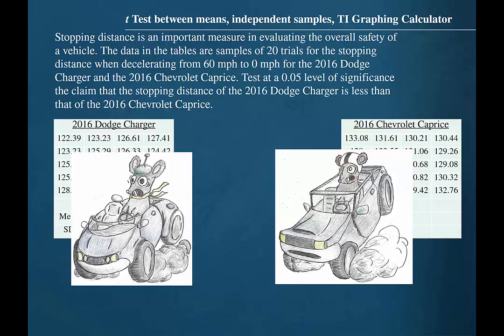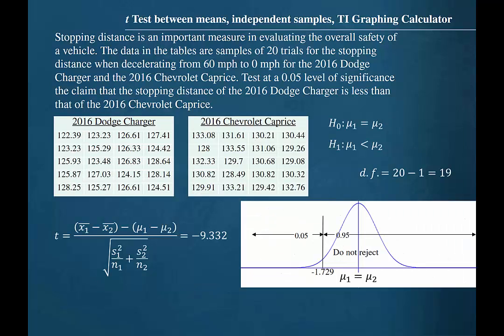In a previous video, we conducted a hypothesis test about the difference between means where samples were taken from independent populations and the population standard deviations were unknown. We used a table to find the critical value of negative 1.729 and the formula for the difference between means where the population standard deviations are not assumed to be equal to find the t-test value. That t-test value was calculated to be negative 9.332.